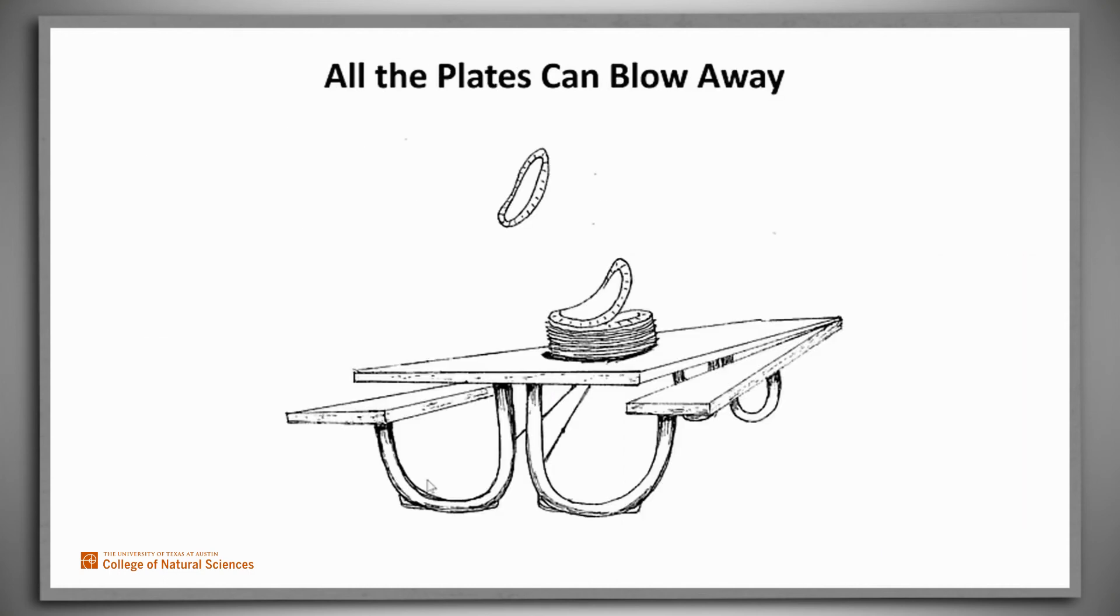We can use the same reasoning whenever we can order a set of objects and number them, starting with the first one. So for example, if the top plate on the stack can blow away, and whenever the plate above you has blown away, you too can blow away, it has to be the case that all plates can blow away.